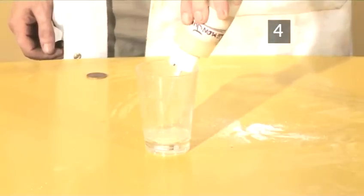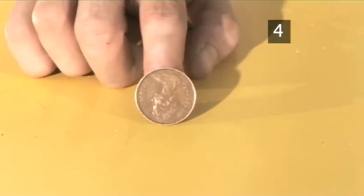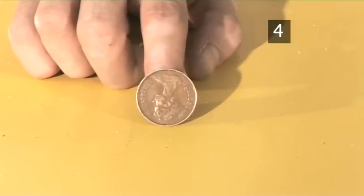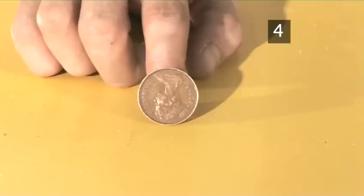The penny is made of copper. It is dirty or tarnished because the copper has reacted with oxygen in the air over time and a layer of copper oxide has formed.